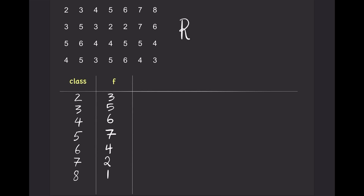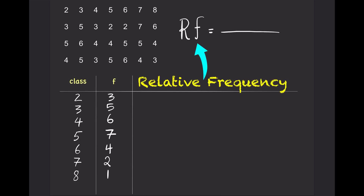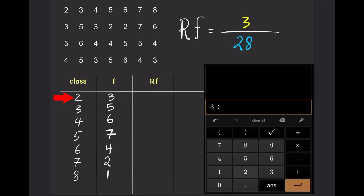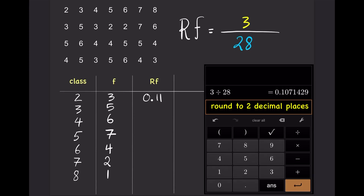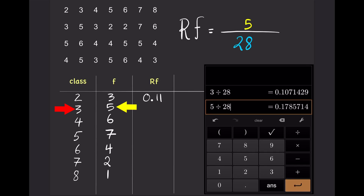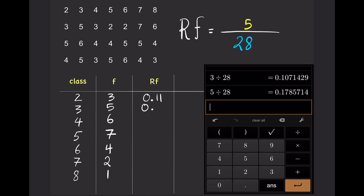To calculate the relative frequency for each class, simply take the frequency for each class and divide by the total frequency. So for the first class, 2, relative frequency is 3 divided by 28 equals 0.11. And for the second class, 3, relative frequency is 5 divided by 28 equals 0.18.